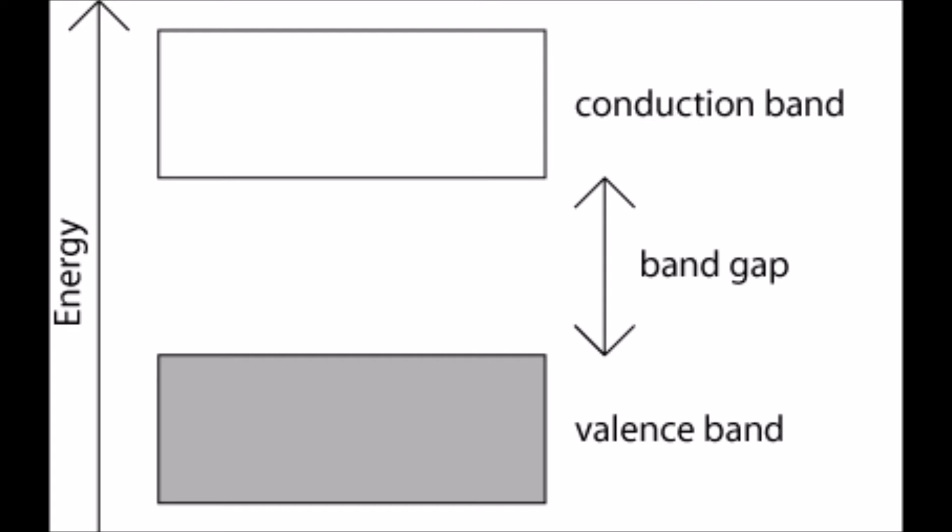There are three important types of energy bands in solids. These energy bands are responsible for various phenomena and behaviors of the solid. The three energy bands are: valence band, conduction band, and the forbidden band — also known as the forbidden gap.